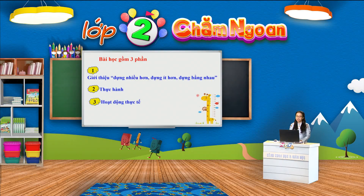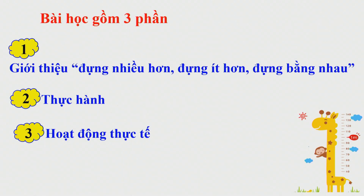Bài học chúng ta sẽ có ba phần. Phần thứ nhất, cô sẽ giới thiệu cho các em các cụm từ đựng nhiều hơn, đựng ít hơn, đựng bằng nhau. Phần thứ hai, chúng ta sẽ thực hành. Và phần thứ ba là hoạt động thực tế. Cô mời các em đến với phần đầu tiên.